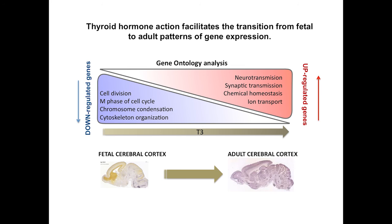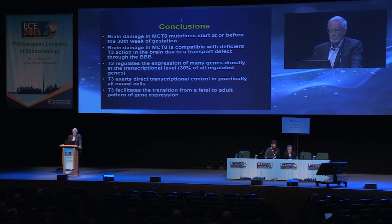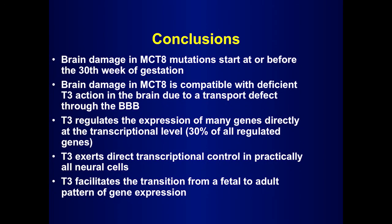This conclusion would not be so surprising, but at last we have the molecular basis to confirm that thyroid hormone facilitates the fetal to adult patterns of gene expression during development. As conclusions: brain damage in MCT8 mutations starts at or before the 30th week of gestation. Brain damage in MCT8 is compatible with deficient T3 action in the brain due to a transport defect through the BBB. T3 regulates the expression of many genes directly at the transcriptional level — around 30% of all regulated genes — and T3 exerts direct transcriptional control in practically all neural cells. And T3 facilitates the transition from a fetal to an adult pattern of gene expression.